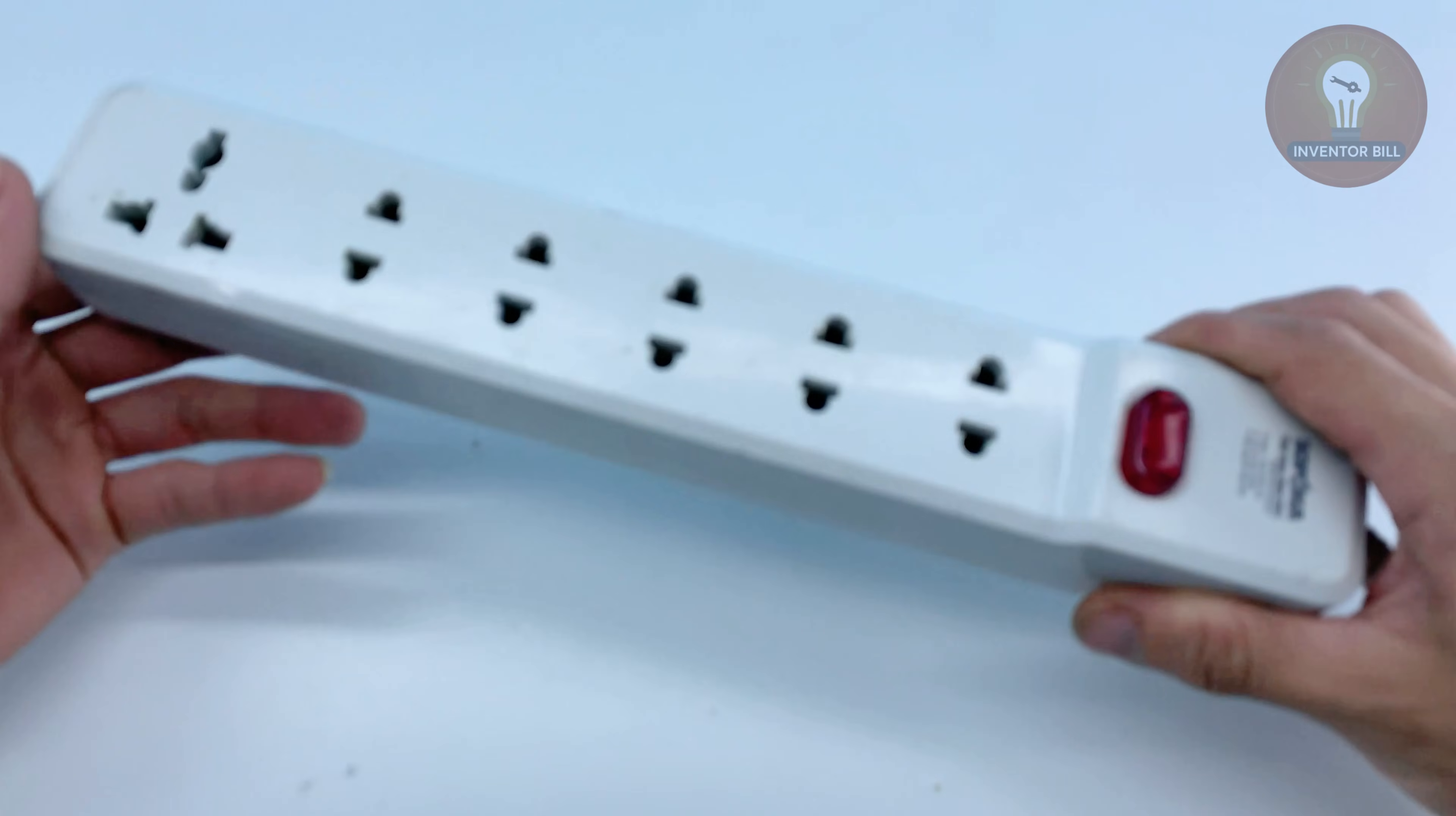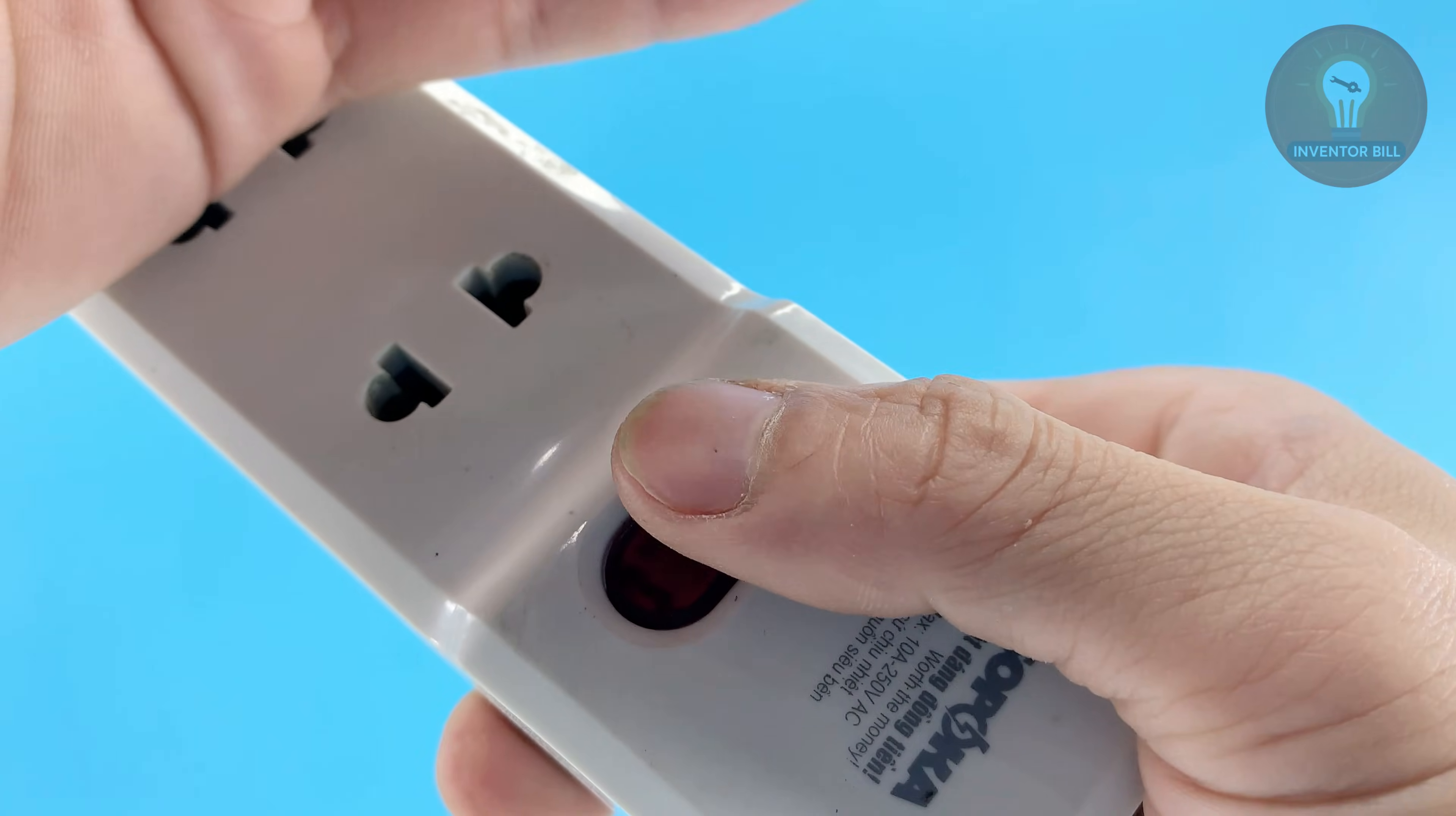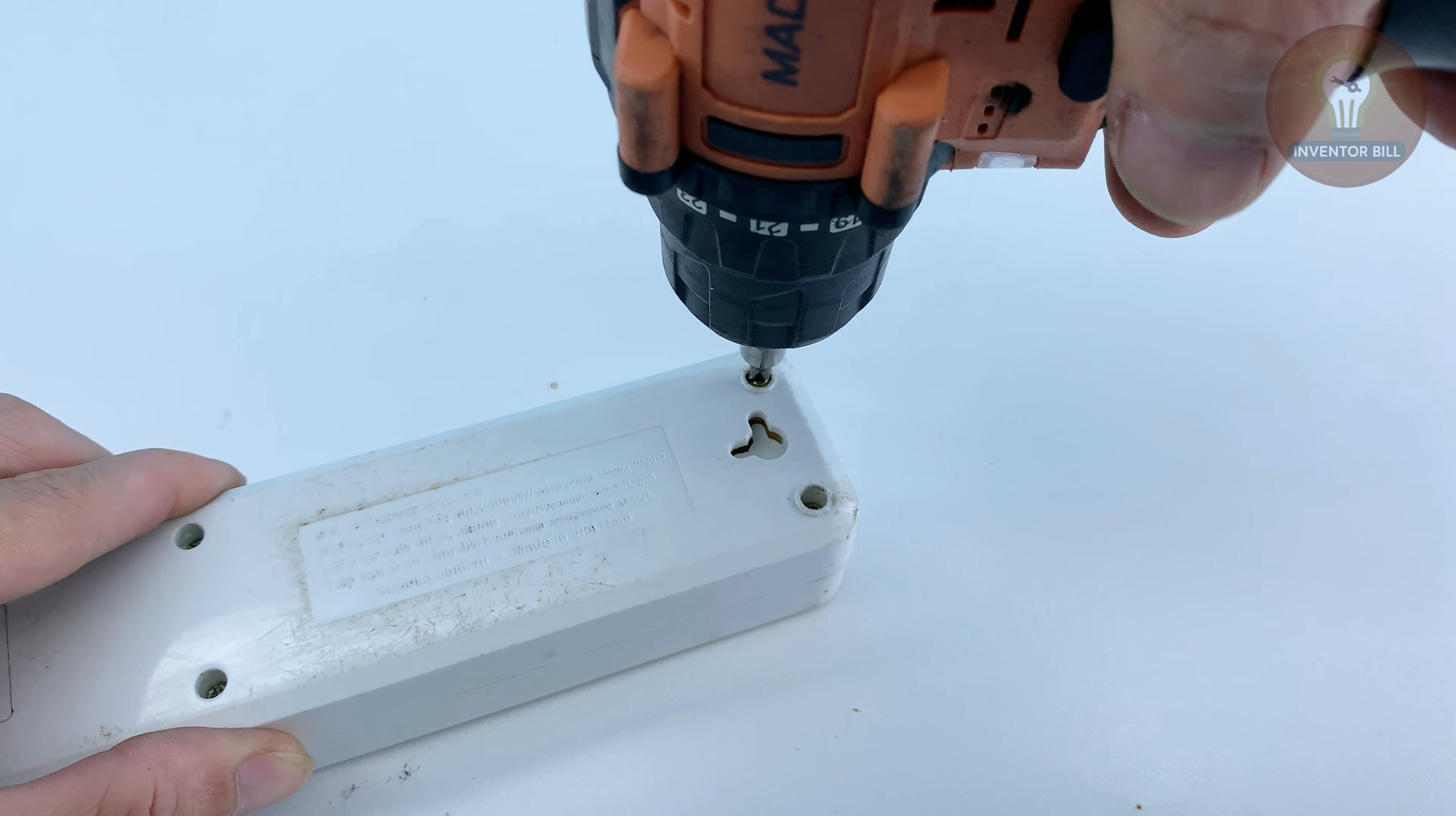Why spend money on a new soldering iron when your old one might just need a quick clean to work like new again? Most of the time when a solder joint doesn't hold or the tip won't melt solder properly, it's not because your tool is broken, it's just dirty or oxidized.